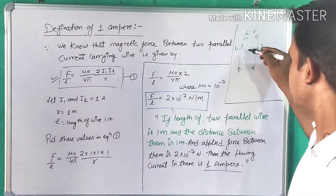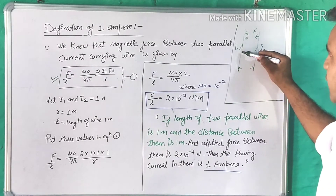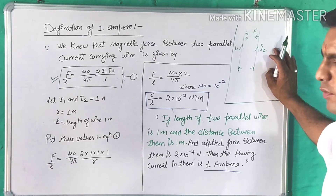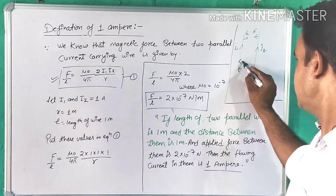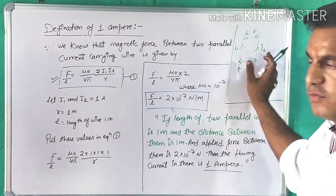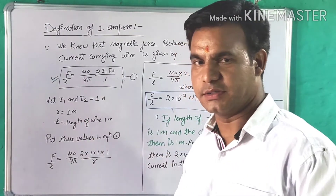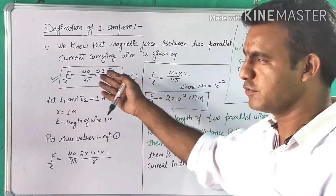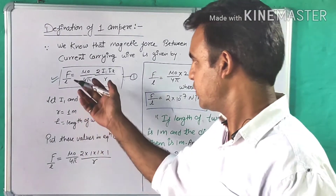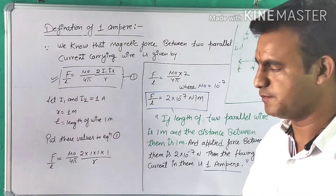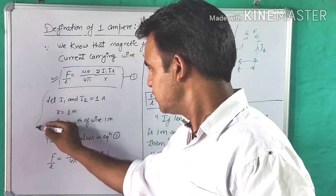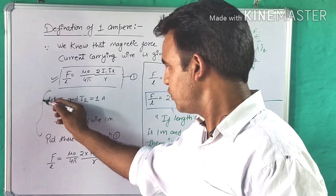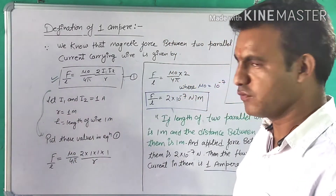Let us take: in the first wire, I1 current flows, and in the second wire, I2 equals 1 ampere current flows. And the separation between the two wires — let us take — is 1 meter. And the length of the wire is also 1 meter. So we use force per unit length. Put these values — I1, I2, R — into equation 1.